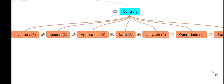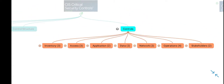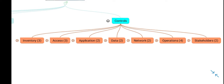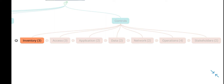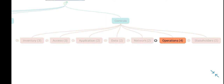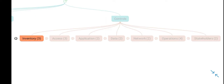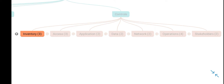Coming over to the controls: for my own understanding, I have divided these controls into different categories — inventory management or configurations, access control, application security, data security, network security, security operations, and stakeholder management, which includes your own HR and also service providers. This is my distribution; it is not reflected in the main document and has no link with the main document. It is just for my understanding that I have grouped these 18 controls into these 7 categories.